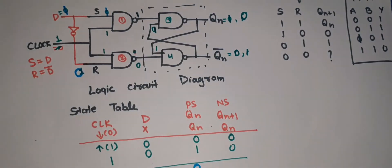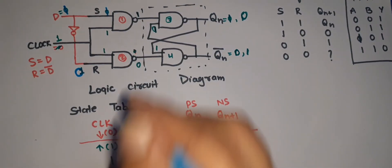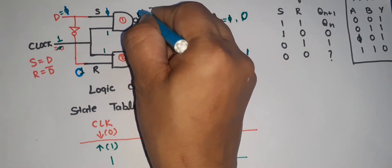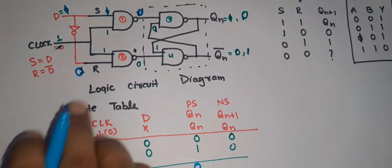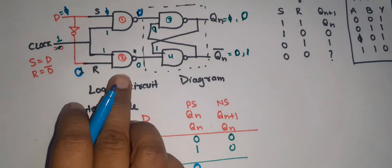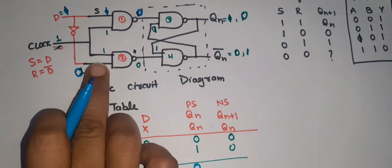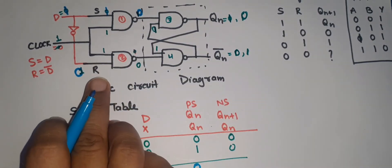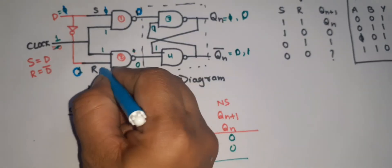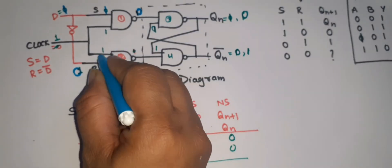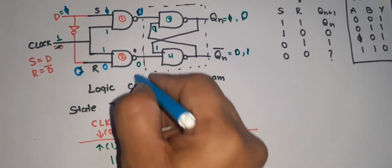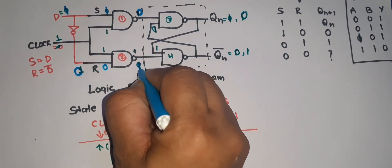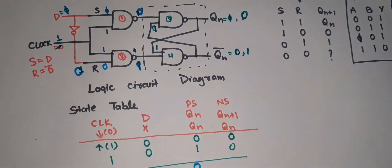Both inputs are one so output is zero. For gate number two, clock is one but R-bar input is zero, meaning one input is zero, then gate number two output is one.